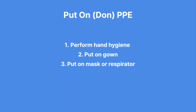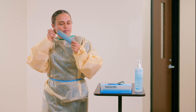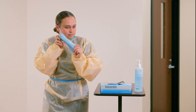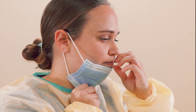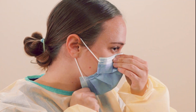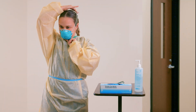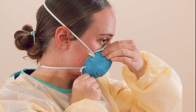Step 3: Put on mask or respirator. A mask or respirator serves as a barrier to protect your respiratory system from any potentially infectious agents. Secure the ties at the middle of your head and neck, or secure the elastic bands around your ears. Fit the flexible band to your nose bridge and ensure the mask or respirator fits snugly to your face and below your chin. If you're wearing an N95 respirator, fit check your respirator.